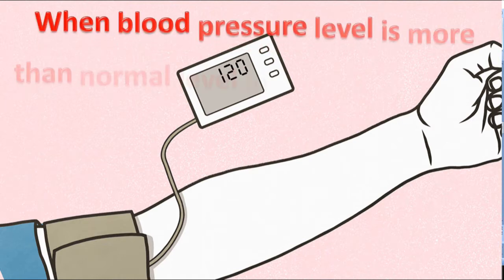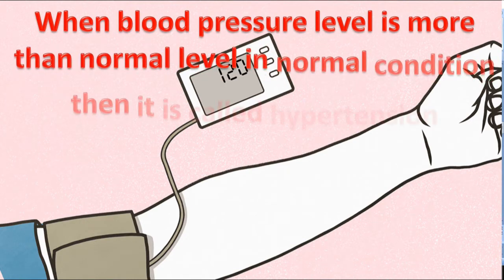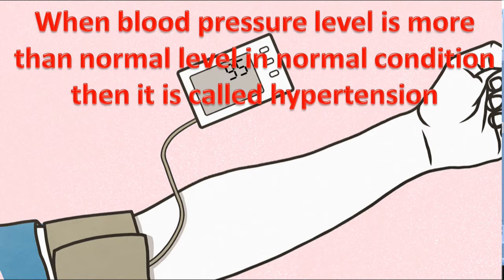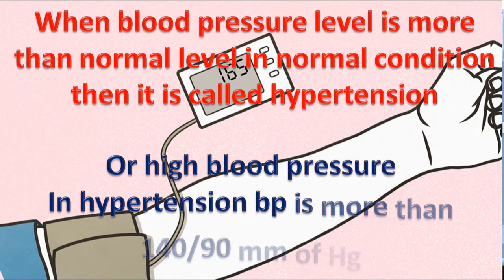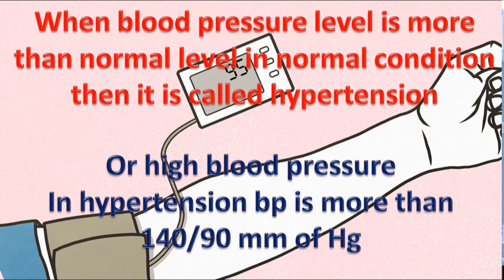When blood pressure level is more than the normal level, that condition is called hypertension. In hypertension, systolic blood pressure is more than 120 and diastolic blood pressure is more than 80 mm of Hg. It is also known as high blood pressure. In high blood pressure or hypertension, blood pressure is more than 140 by 90 mm of Hg.